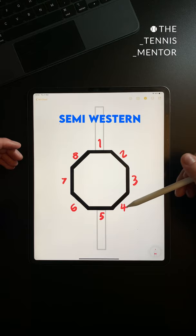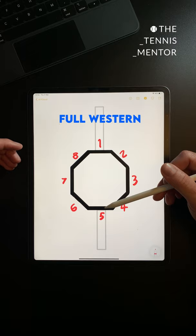Bevel number five is the full western grip and can produce extreme topspin but is very difficult when receiving low balls or trying to flatten out your shot.